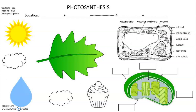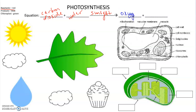We're going to use this graphic organizer as a nice overview for photosynthesis and everything that happens in photosynthesis. For the general equation, we're going to have carbon dioxide and water — written in red because these are the reactants — and we will add in some sunlight, and from that we will produce oxygen and glucose or sugar.